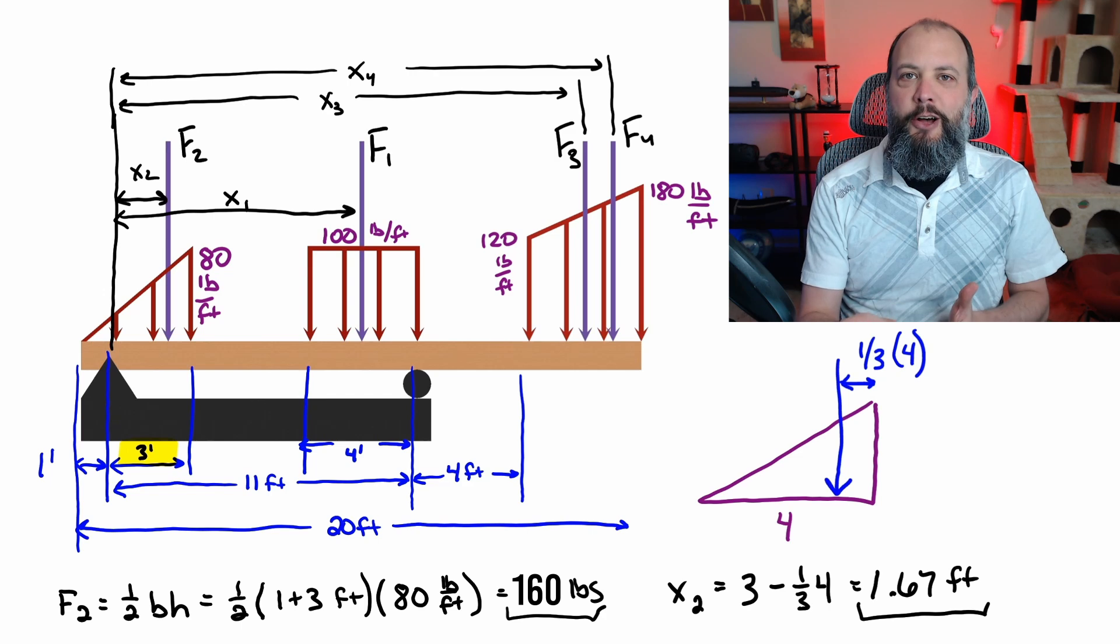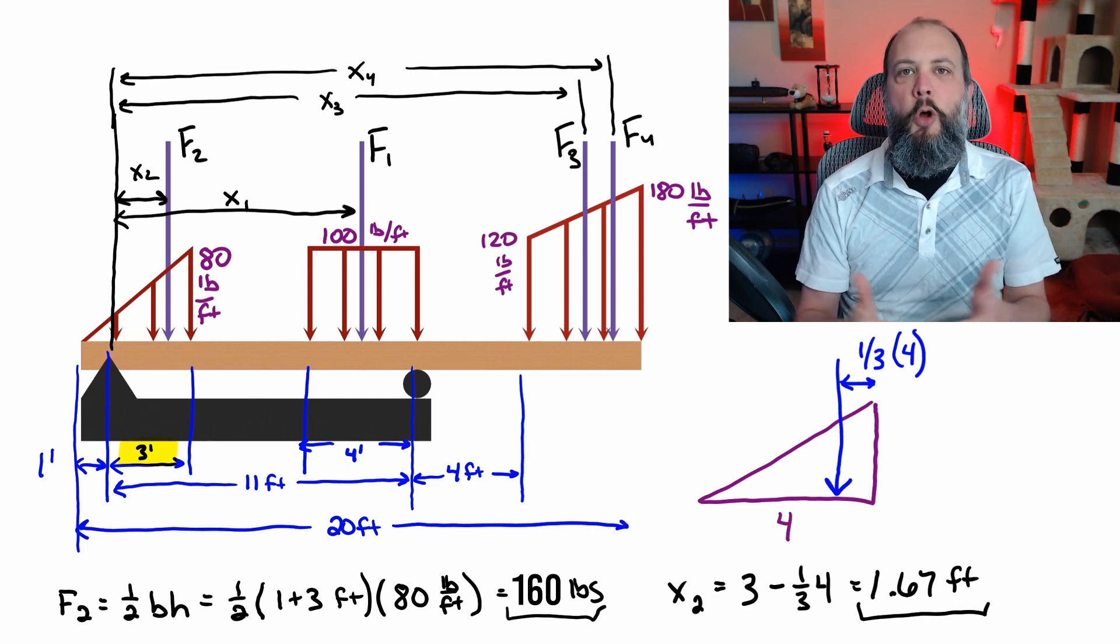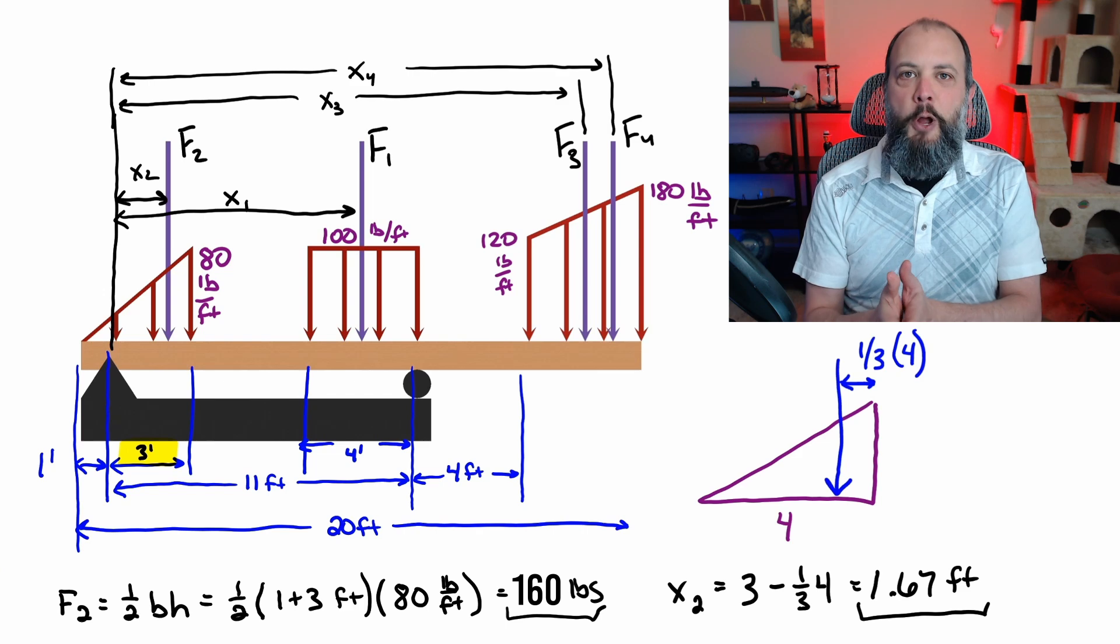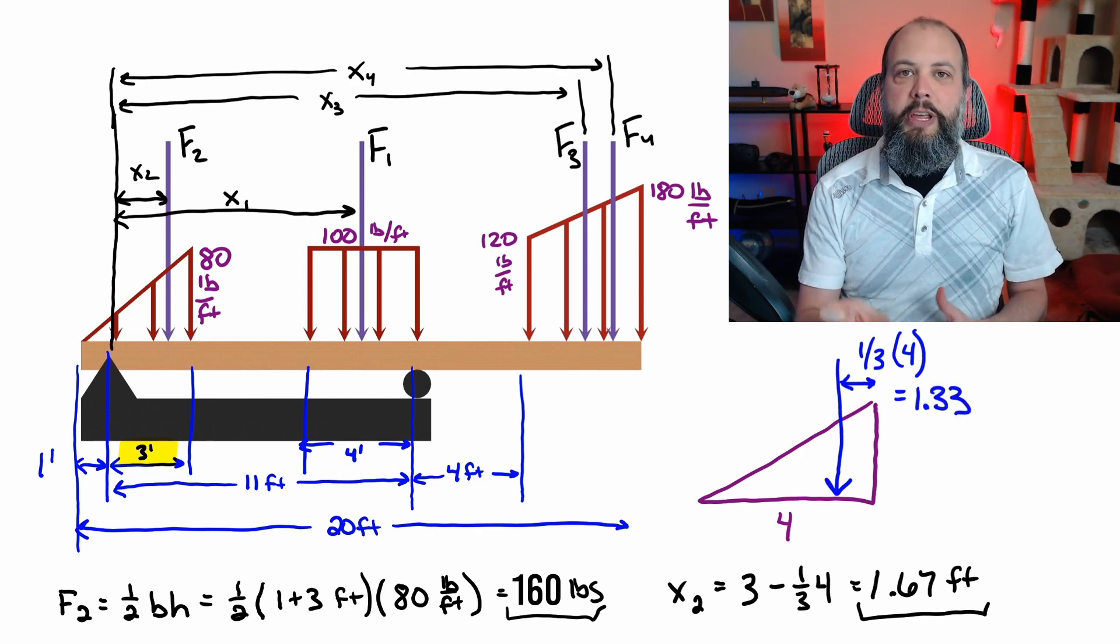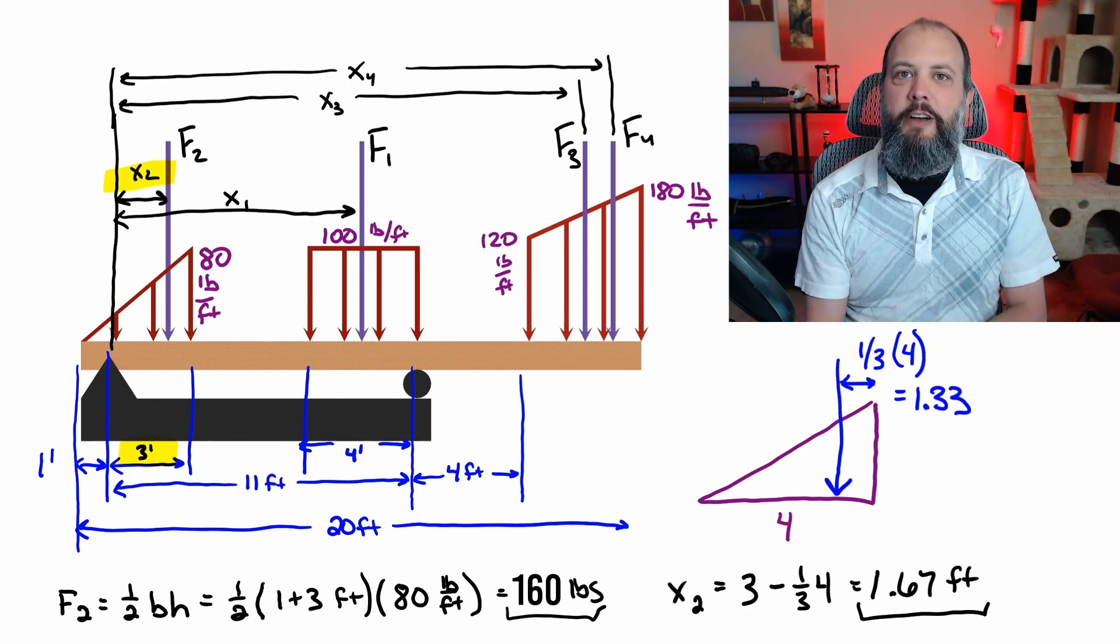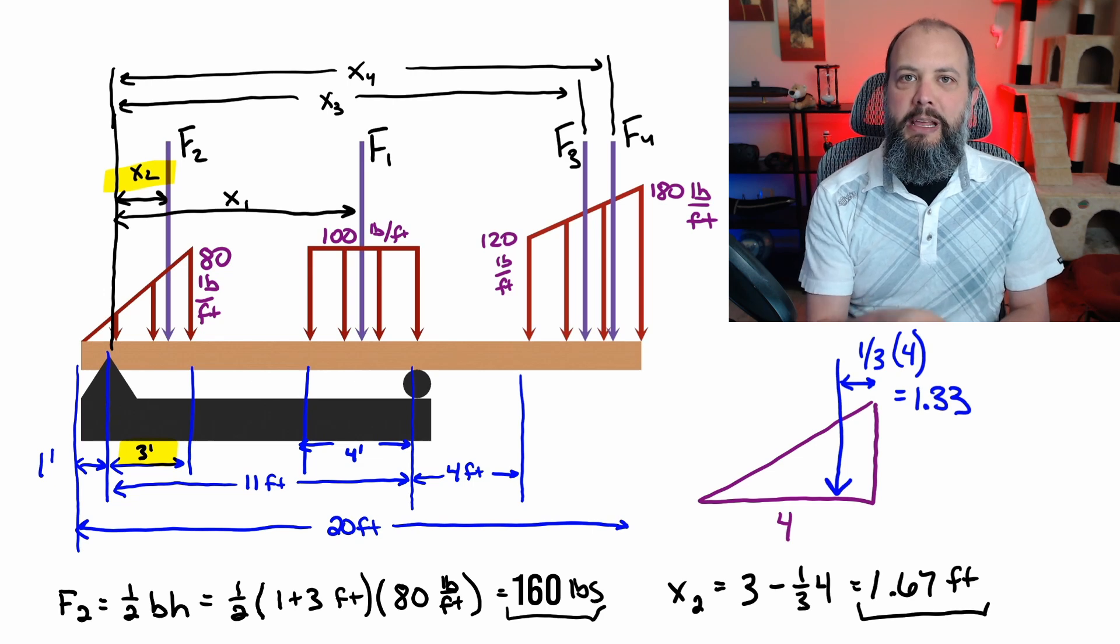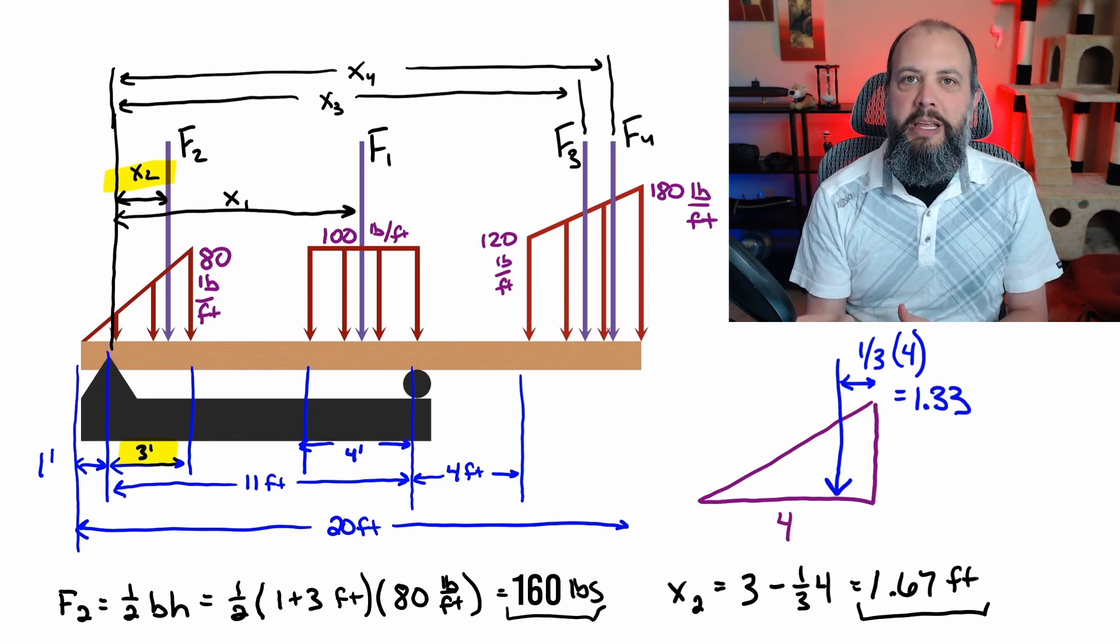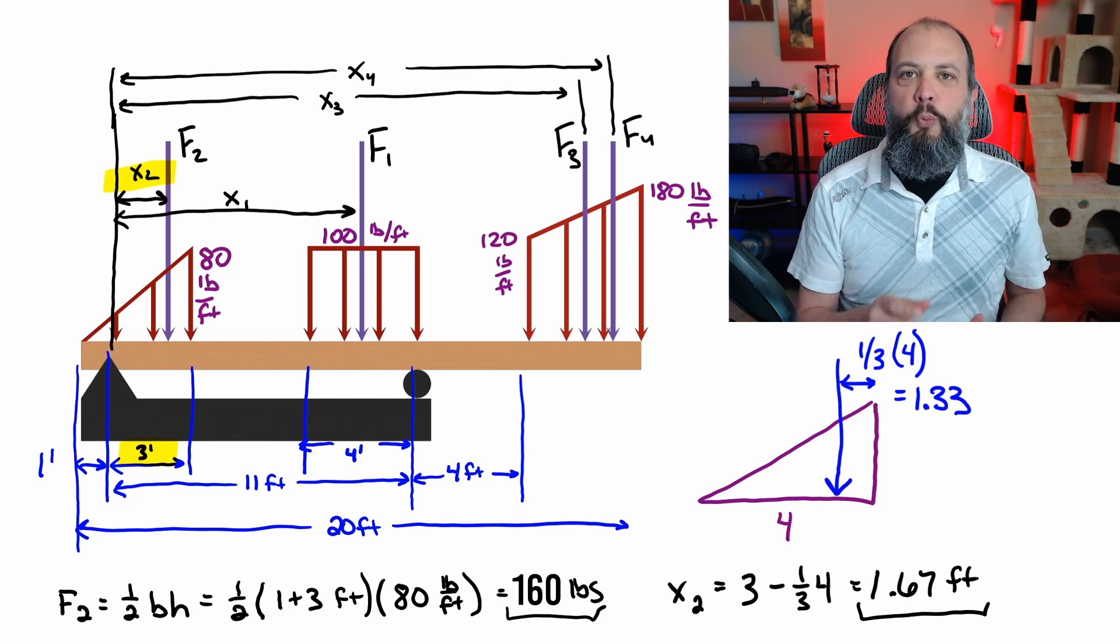Within the distributed load itself, the location of the force is going to be one-third of the base. So one-third of four. And that's the distance from the right-hand side, the tall side of the triangle, which is a distance of 1.33. And so the far right-hand side of the triangle is a distance of three feet from the pin joint. So I'm subtracting three minus 1.33 in order to find X2. And I get a value of X2 then is 1.67.